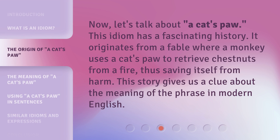Now, let's talk about 'a cat's paw.' This idiom has a fascinating history. It originates from a fable where a monkey uses a cat's paw to retrieve chestnuts from a fire, thus saving itself from harm. This story gives us a clue about the meaning of the phrase in modern English.